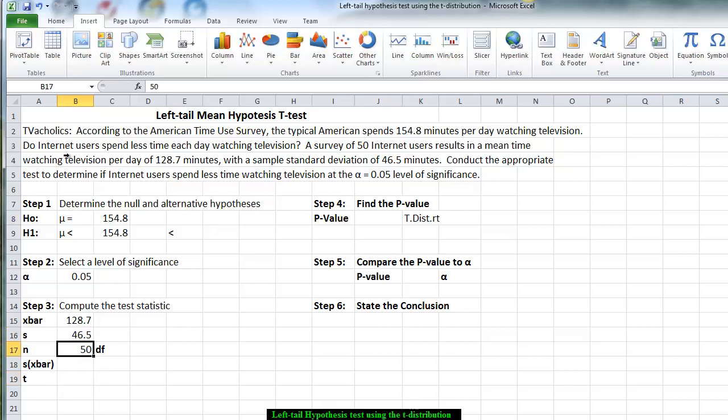Since we know it is a t distribution because we're using a sample standard deviation and not a population standard deviation, using the t table we need degrees of freedom, which is equal to n or the 50 minus the 1, so we have 49 degrees of freedom.